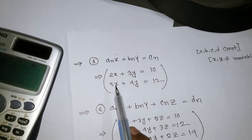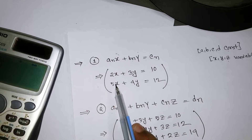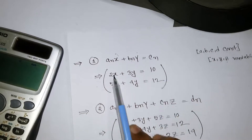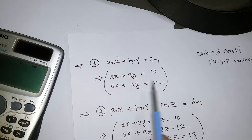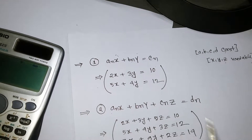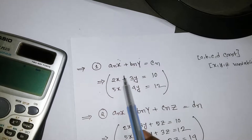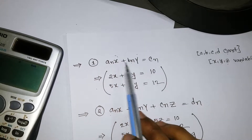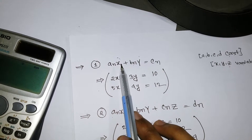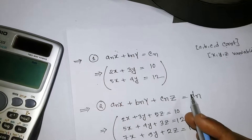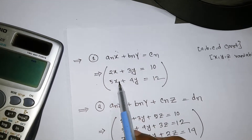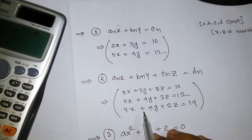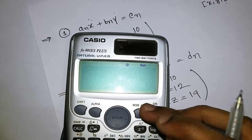For example, 2X plus 3Y equals 10 — this is just a dummy example. And we have 5X plus 4Y equals 12. The values 2, 3, 10, 5, 4, and 12 are constants; only X and Y are variables. This is a linear problem with two variables and two equations. If we had three variables X, Y, Z, we would need three equations to solve.